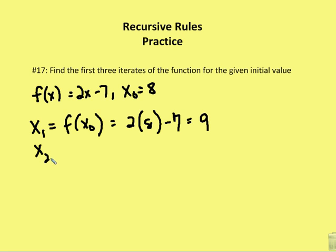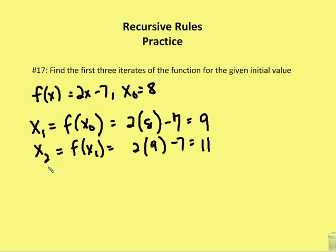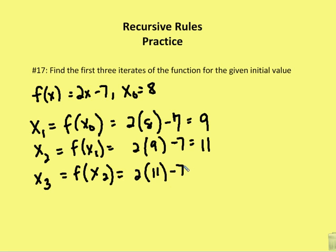Then I find x sub 2, which is equal to f of x sub 1, or 2 times 9 minus 7, which equals 18 minus 7, or 11. For my final iterate, x sub 3, I take the function of x sub 2, and x sub 2 is 11. So I have 2 times 11 minus 7, or 22 minus 7, and that is equal to 15.